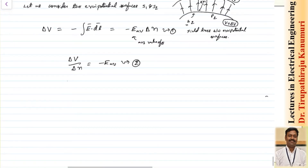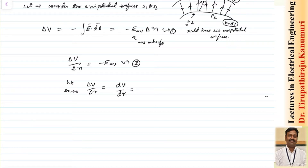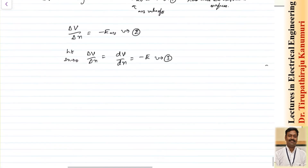Now let us take the limit as delta N tends to 0. As the limit tends to 0, delta V by delta N becomes dV by dN. So dV by dN gives the electric potential at a particular point because we are reaching a small infinitesimal area. Let us take this as equation number 3.